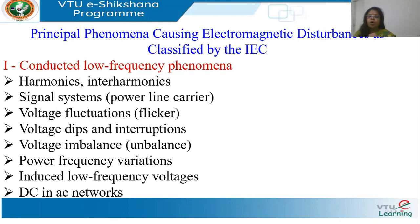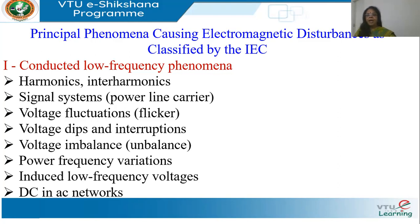We will see how the classification has been done without going into detailed definitions just yet. The first class is conducted low-frequency phenomenon. For electromagnetic environments, we have conduction — where there is direct contact through a conducting medium such as a conductor or cable — and radiation, where the electromagnetic phenomenon travels through a medium without contact between the source and recipient. Conducted low-frequency refers to power frequency: 50 Hz or 60 Hz.